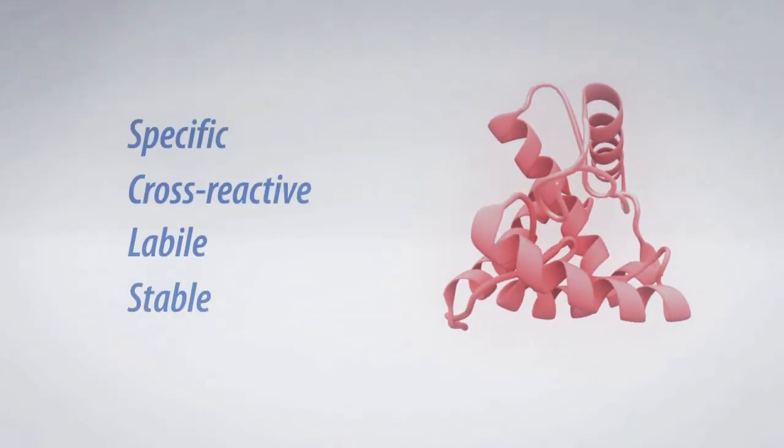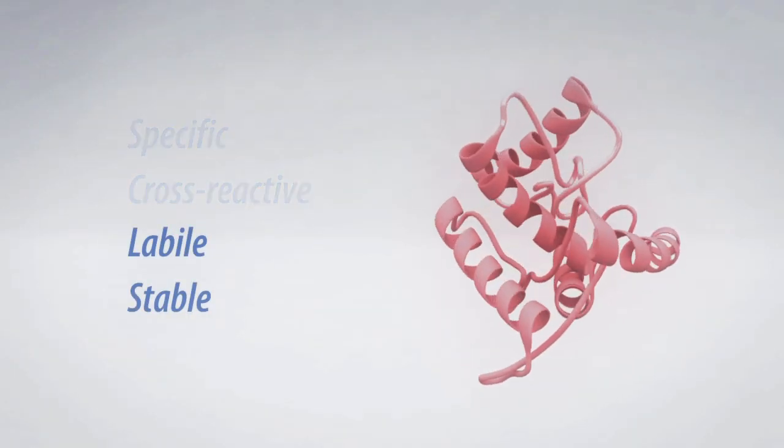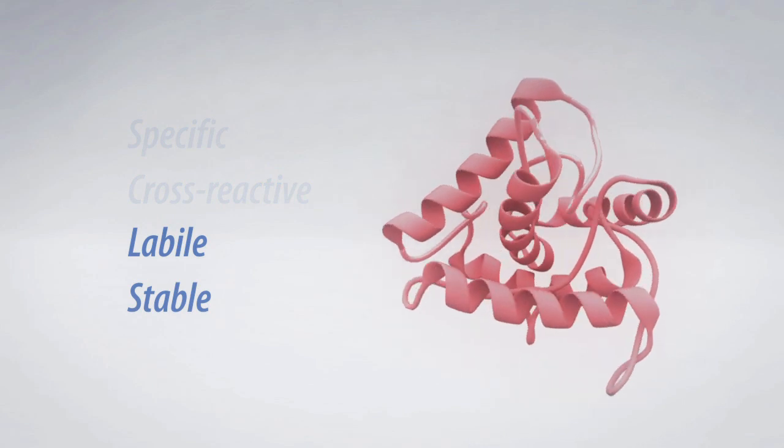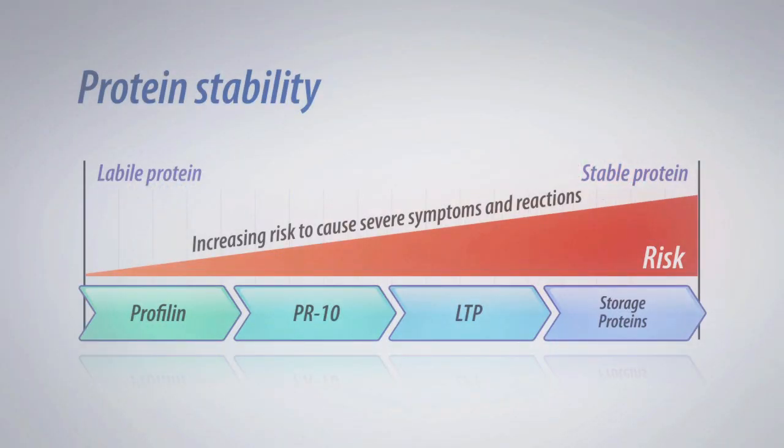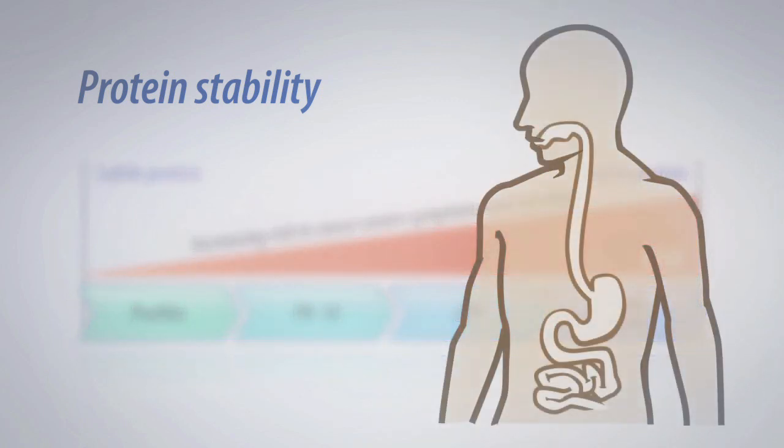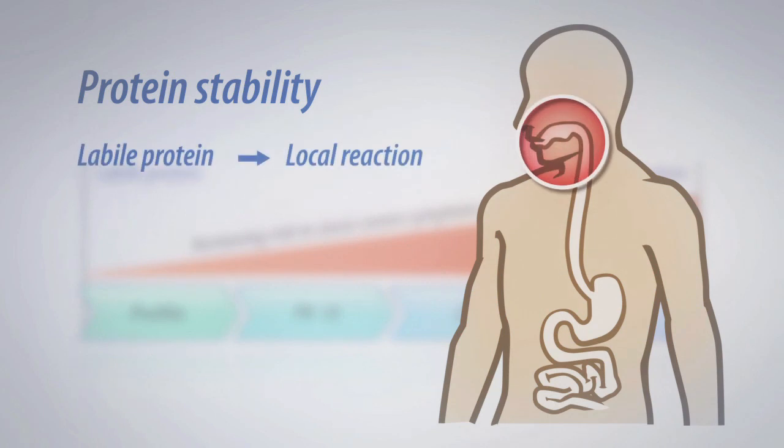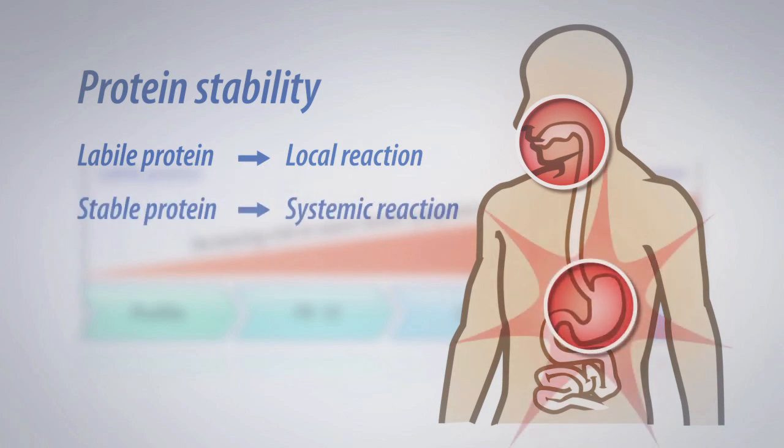Additionally, allergen components can be classified according to their protein stability and further defined as either labile or stable proteins. Sensitization to stable proteins, such as storage proteins, indicate the greatest risk for severe allergic reactions. Labile proteins, which are typically dissolved and broken down more quickly in the body, tend to cause more local reactions, whereas stable proteins, which are typically more heat-stable and more difficult to break down, tend to cause more severe systemic reactions.